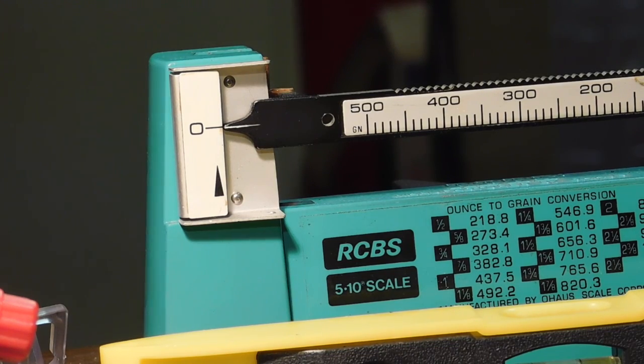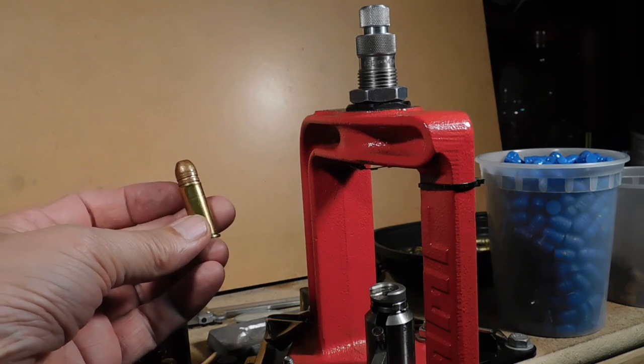So you see that's why we like the Lee Auto Drum powder measure, especially when we do the two-step so you don't get any pops or clicks. Then you get the kind of accuracy you want. That's probably good for standard deviation around ten or eleven or twelve, somewhere around there.